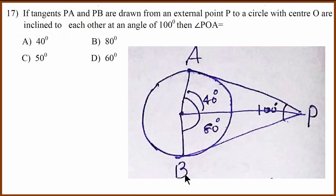17th question. P is an external point. AP and PB are tangents. So this angle is given as 100 degree. We have to find AOP or POA which is this angle. So because this is 100 degree, this has to be 80 degree. Because when you add them, it is 180. So it is 80 degree. And this AOP is half of it. So therefore it is 40 degree. So the correct answer is 40.